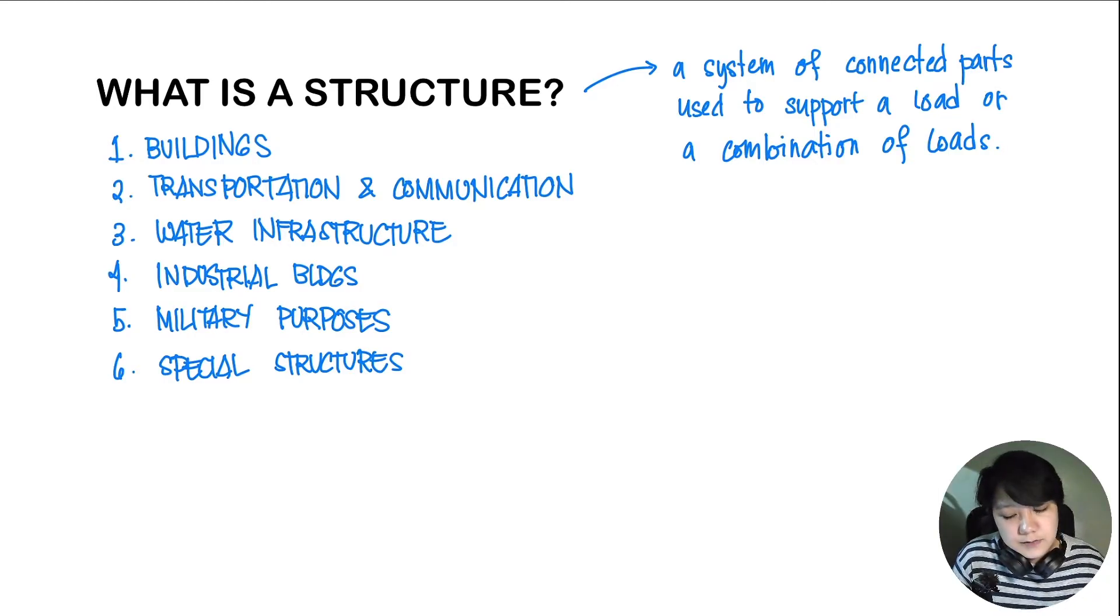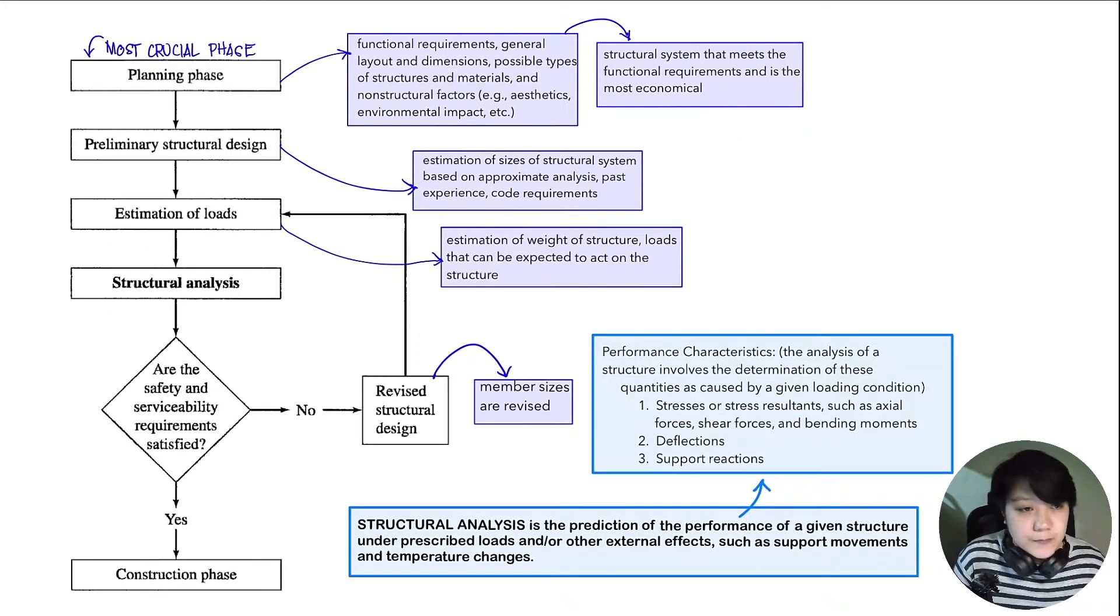Now that you know the different structures that you might encounter as a civil engineer, the next question would be, how do you build those structures? The diagram that you're seeing on your screen is the process that we undergo through when we encounter civil engineering projects. The first phase, which is the most crucial phase, is the planning phase.